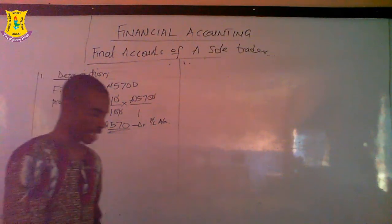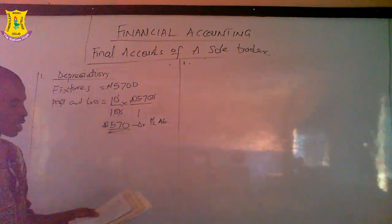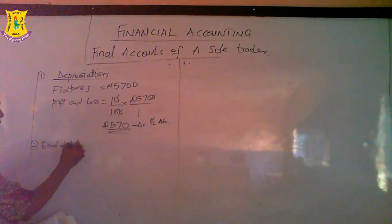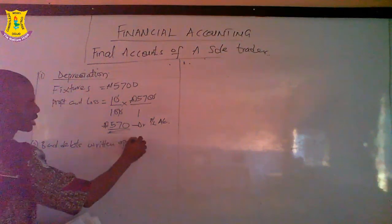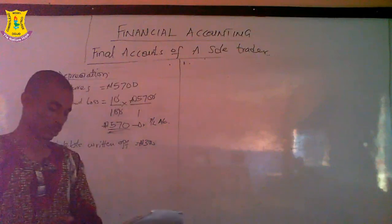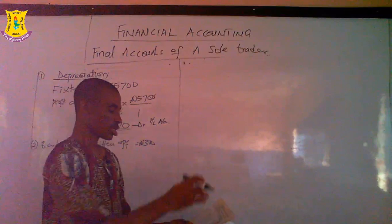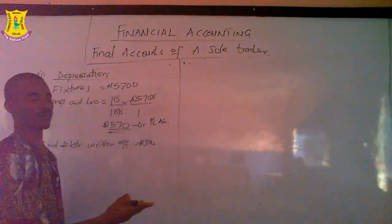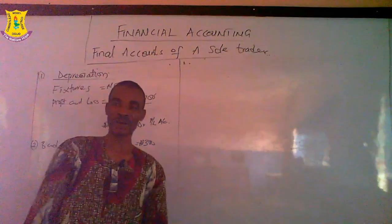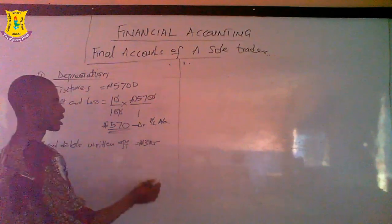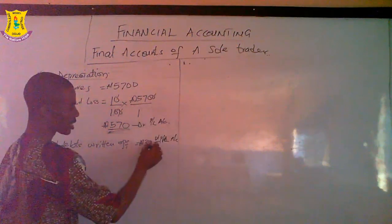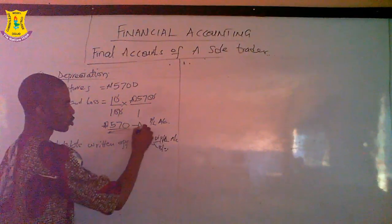The next is additional information 2 — we are to write off bad debt. Bad debt written off amounts to 300. We are not given any prior bad debt provision in the question, but we are given debtors. Since we are asked to write this off, this is taken straight to the profit and loss account to be debited, and also reflected in the balance sheet.